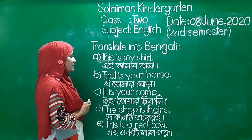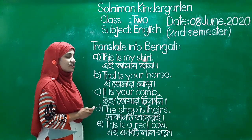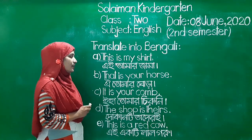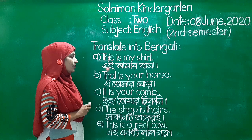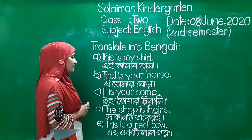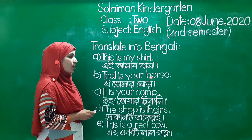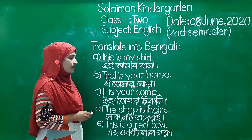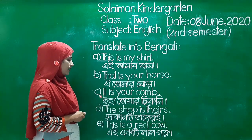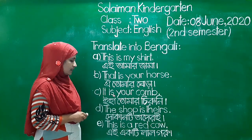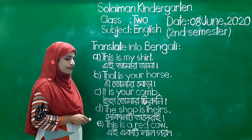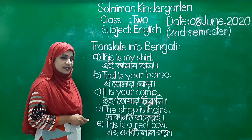A number 1: This is my shark. That is your horse. Q number 1: It is your come. A3: nihaa tumal chiyunhi.